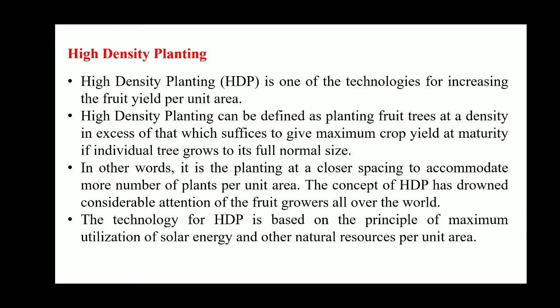Now a very important topic: High Density Planting (HDP). It is an innovative technology to adopt in fruit crops. HDP is a technology that increases yield per unit area — we are not increasing total yield, but per unit area we can increase yield, thereby increasing the productivity of that area. HDP can be defined as planting fruit trees at a density in excess of that which suffices to give maximum crop yield at maturity if individual trees grow to their full normal size.